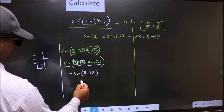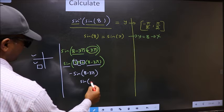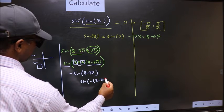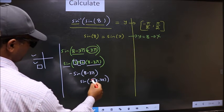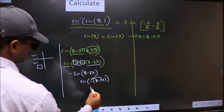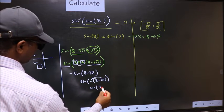Now shift the negative sign inside. So we get negative of 8 minus 3 pi. Now when we multiply these will interchange. So we get 3 pi minus 8.